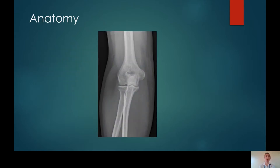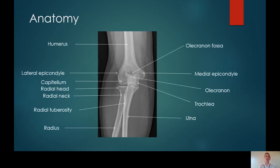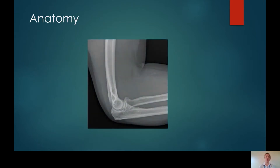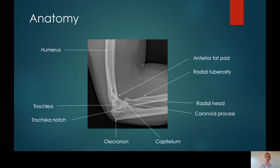We'll begin by looking at an AP radiograph of an adult elbow. I've attached some bony landmarks here and I'll let you look at this in your own time. And a lateral as well.